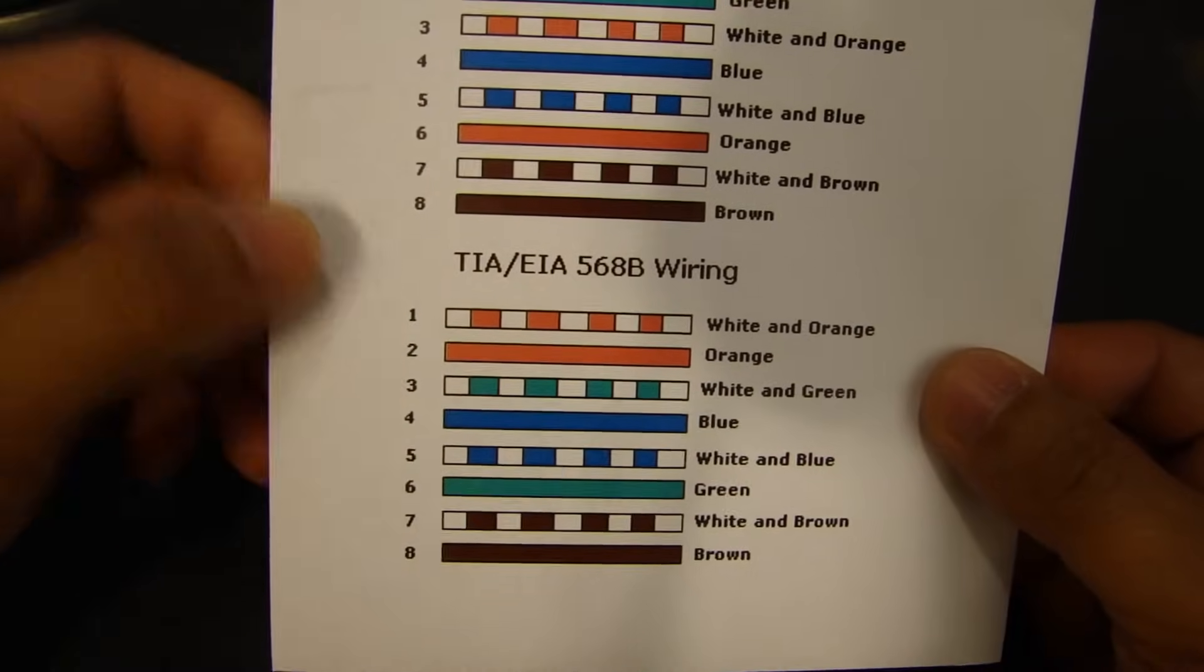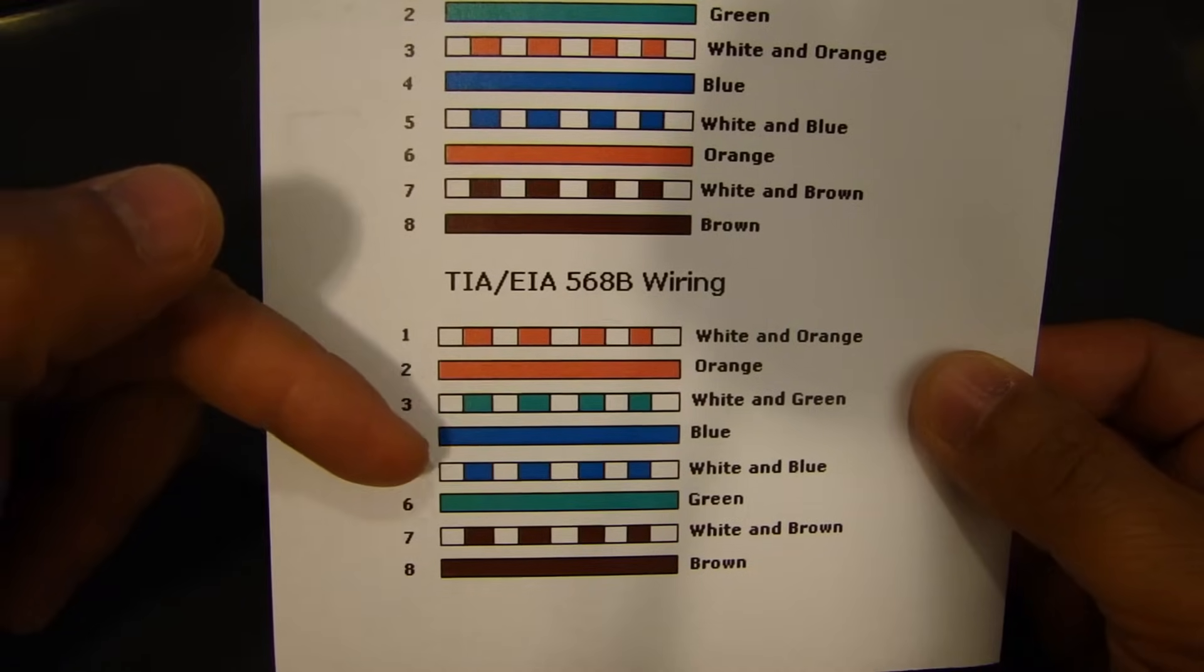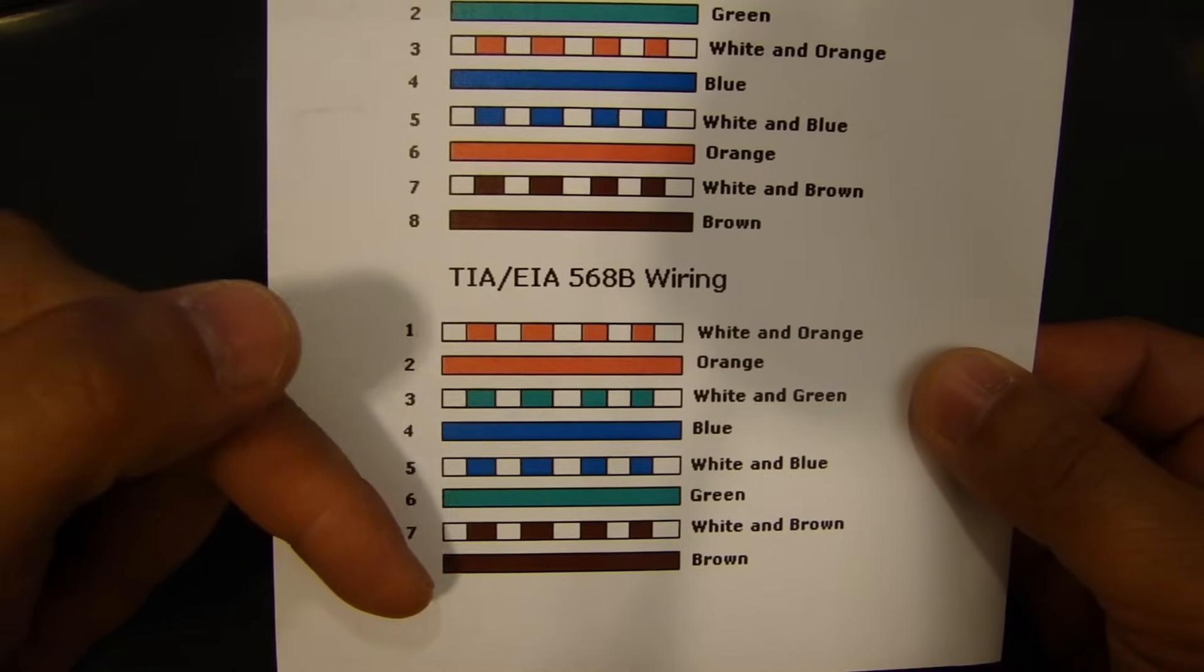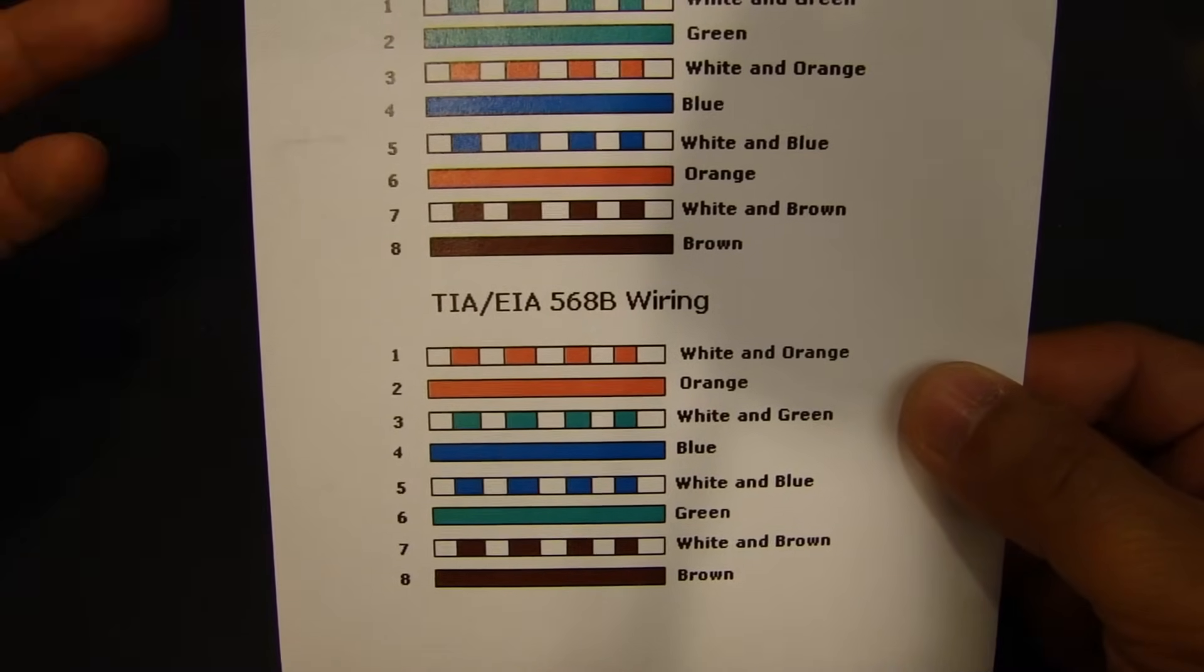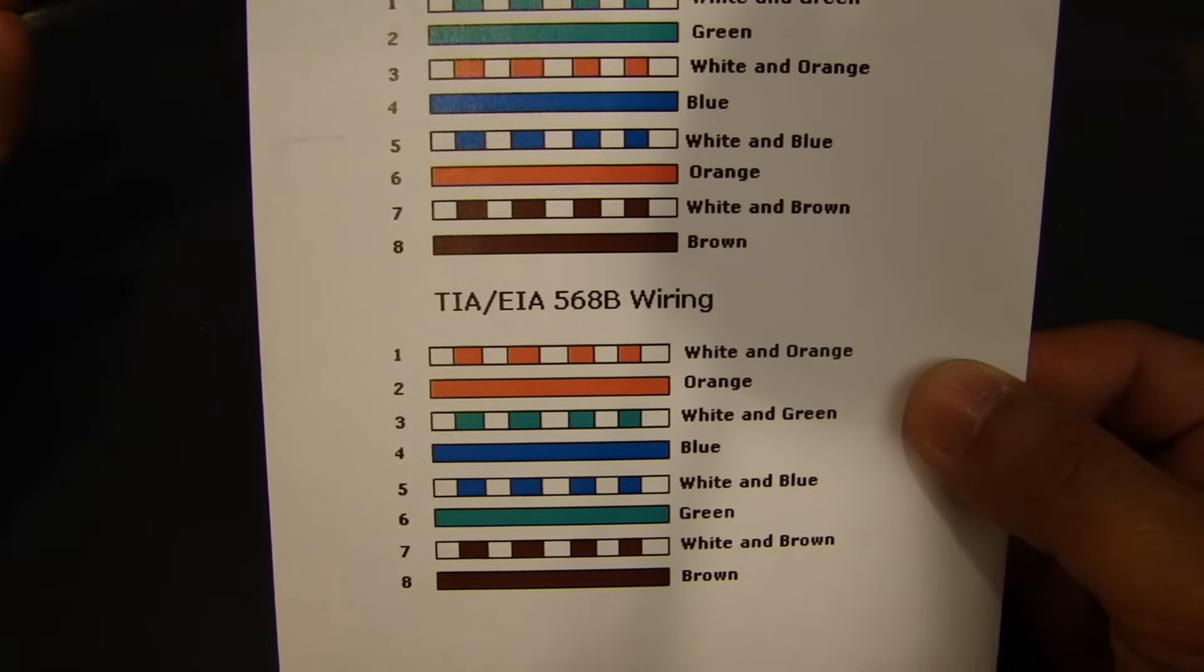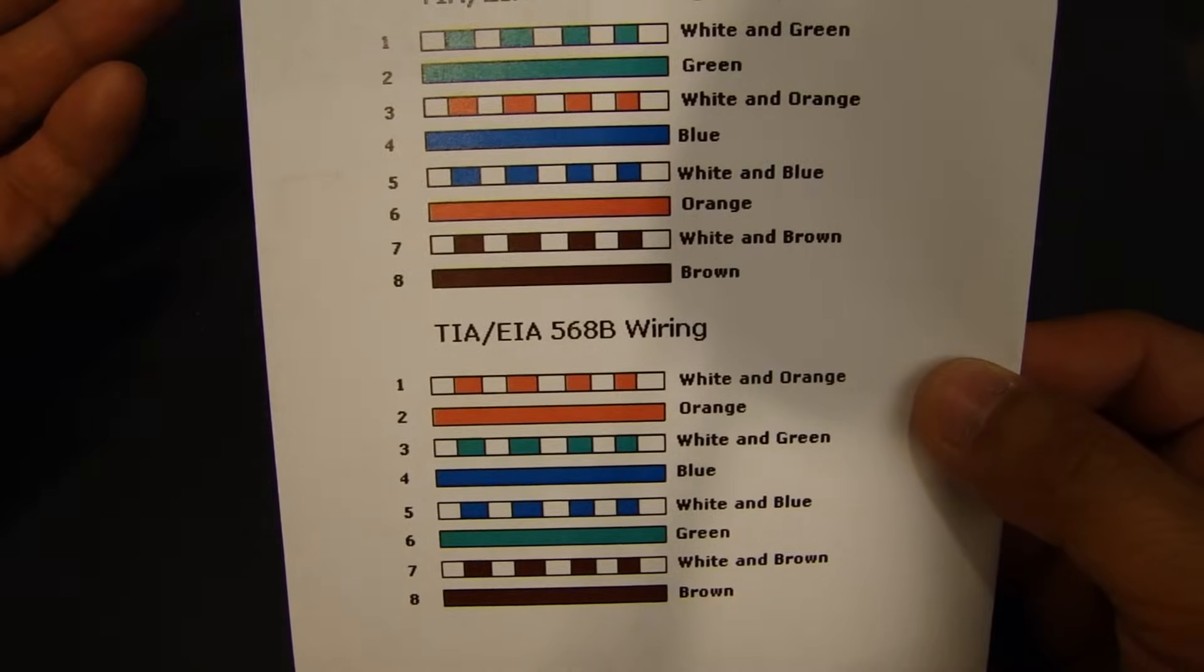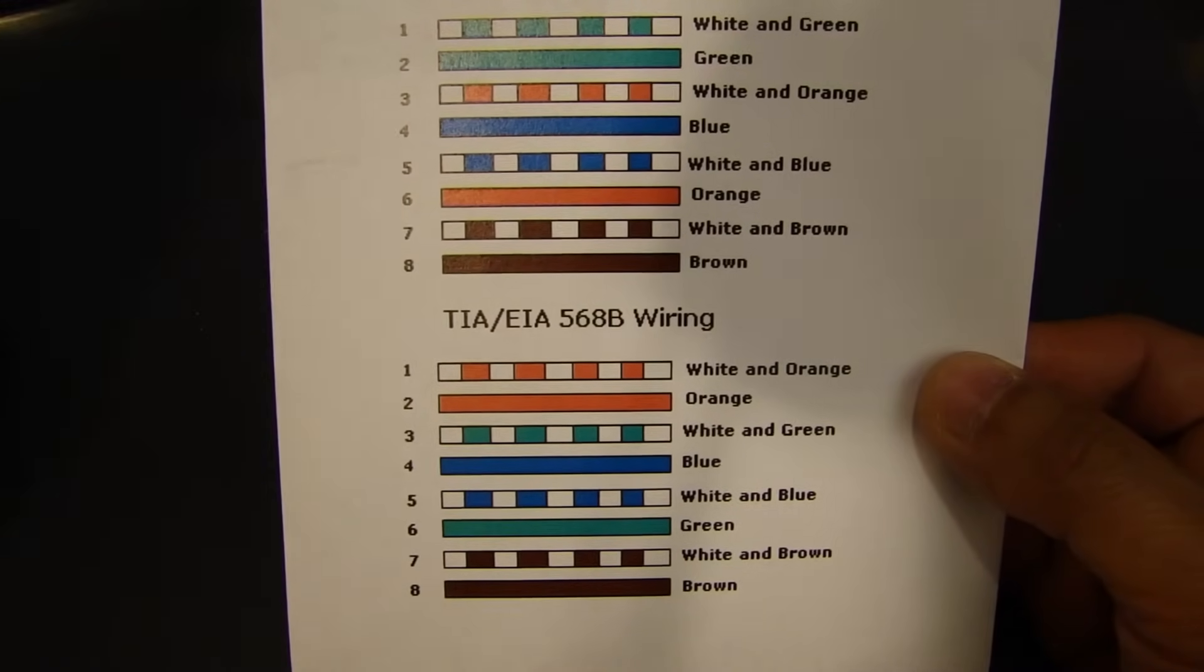And on the crossover side is white-orange, orange, white-green, blue, white-blue, green, white-brown, brown. So these are the pinouts that you need to know. You can Google it for like ethernet pinouts on the internet and you can find these readily available.